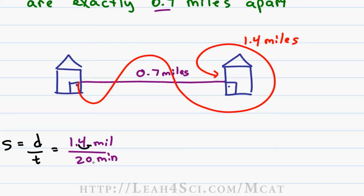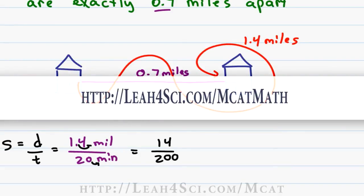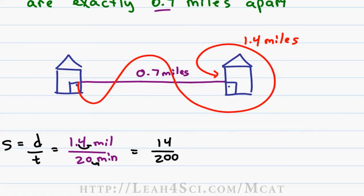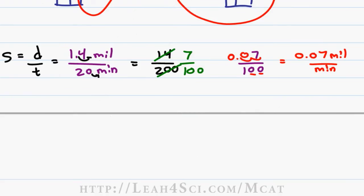Instead, we'll use the trick of multiplying the top and bottom by 10, moving the decimal one space to the right. This gives us 14 over 200. If you're not comfortable with this trick, go back to my math series on my website at leah4sci.com. I got rid of the decimal, making it slightly easier, but 14 over 200 is still too difficult. I'm looking for a number that I can divide out of both of them to make it simpler. 14 and 200 both divide by 2. 14 divided by 2 is 7, 200 by 2 is 100. 7 over 100 is a number divided by some factor of 10, which lets us use my other trick of moving the decimal space back. If I have two zeros, I divide by moving the decimal two spaces back, and that gives me 0.07 miles per minute. This is the speed.